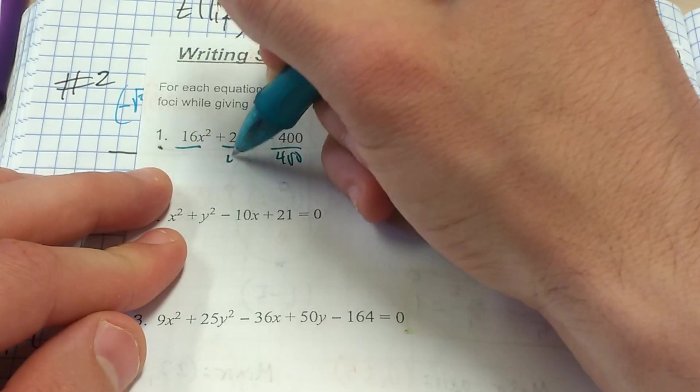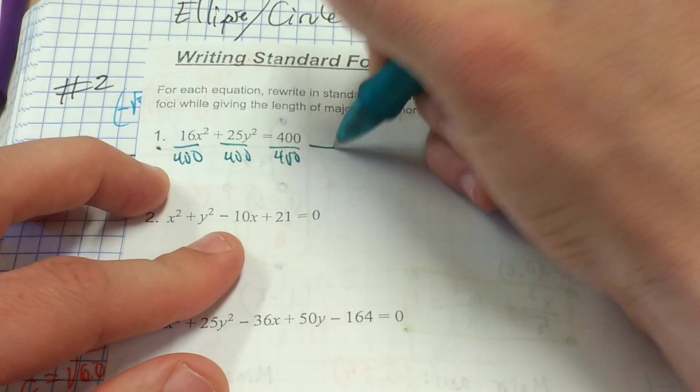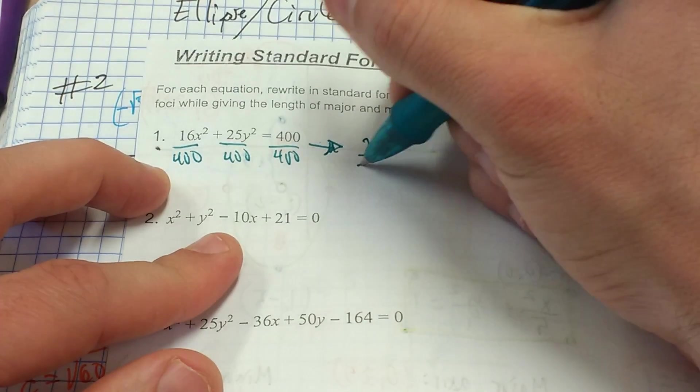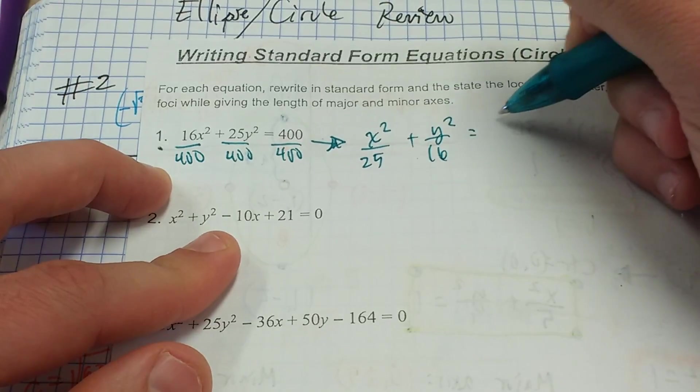But to get it in standard form, we need to set it equal to 1 by dividing by that constant at the end. So we're going to get x squared over 25 plus y squared over 16 equals 1.